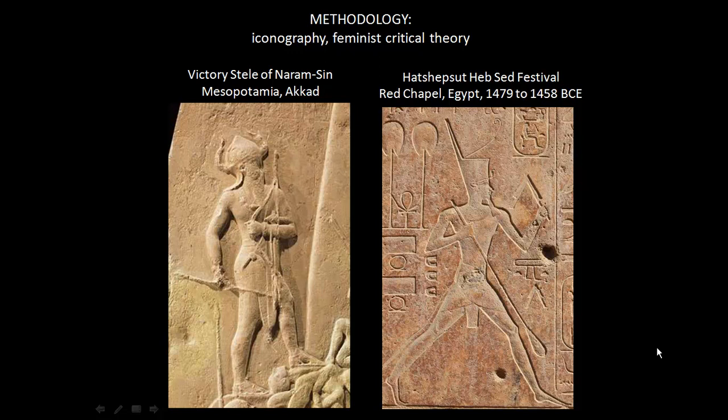Throw in a little formal analysis, look at the potential for symbolism, and then — because a lot of what we look at in this class depicts people — feminist critical theory can help us understand gender and the way that gender fits in with society, politics, religion, or culture: all of the things.